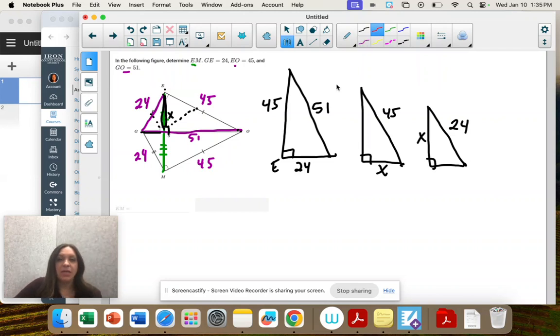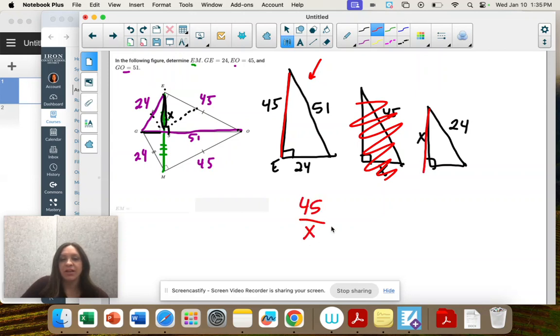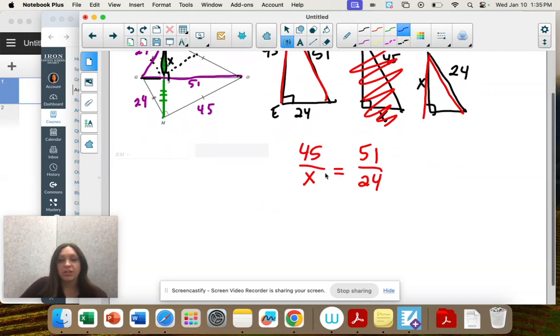All right, so now we need to pick two triangles. And really, you have to use this one. But these two, it doesn't matter. Take your pick. I'm going to go with the smaller numbers. So 45 goes with x. Those are the same side. They're both the long leg. Equal to 51 and 24. So the hypotenuse links. That's our proportion.